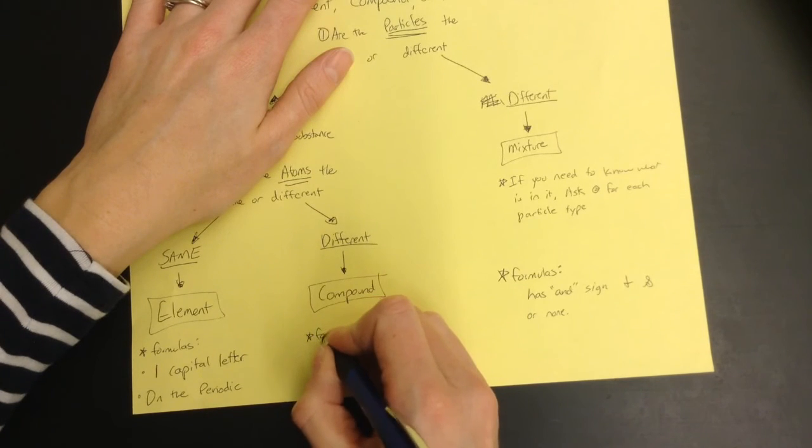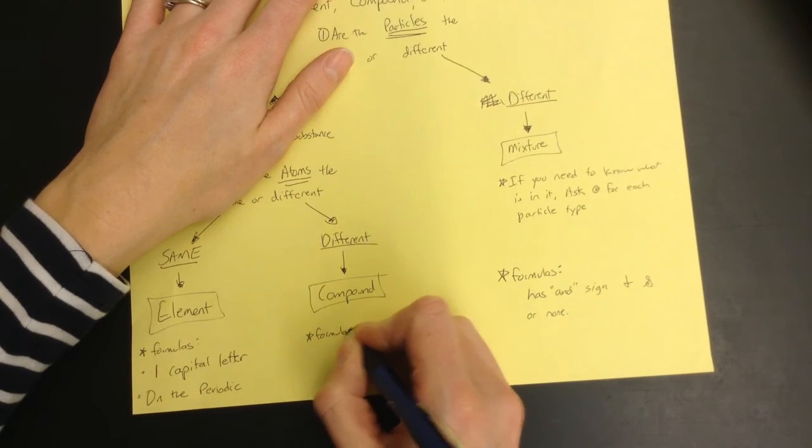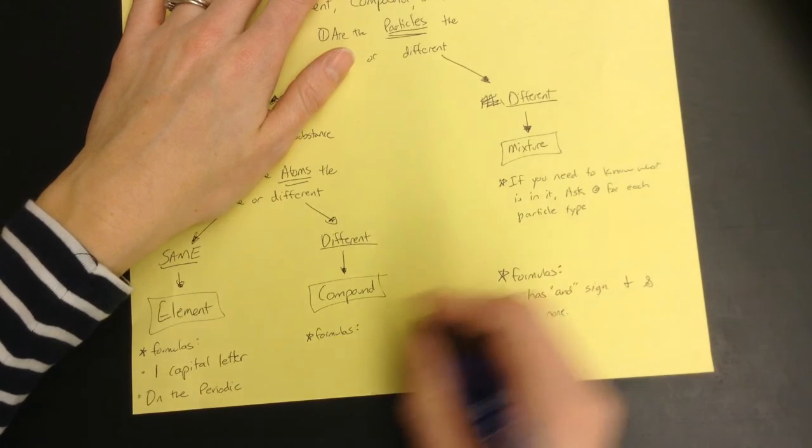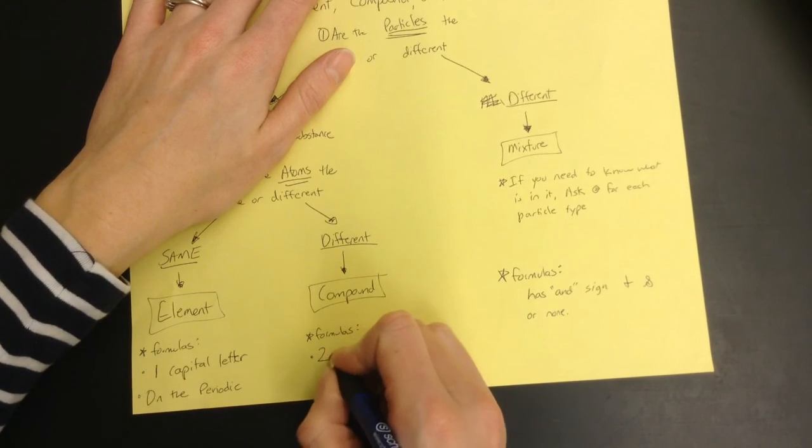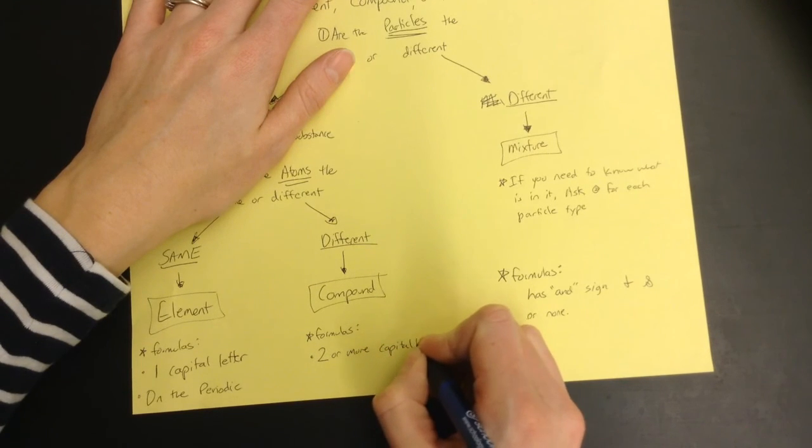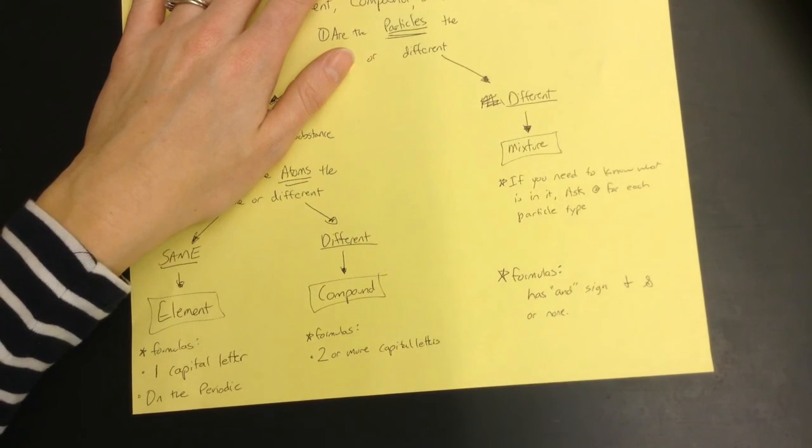Now for a compound, all of the pieces, the letters, if you were to break it up would be on the periodic table, but they are stuck together. They have two or more capital letters. And that's how you know it is a compound.